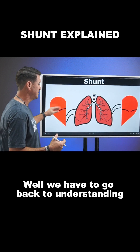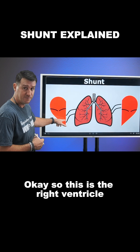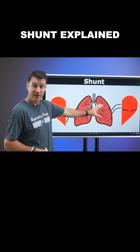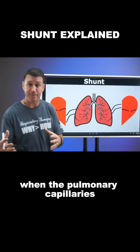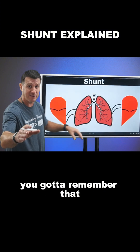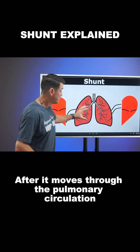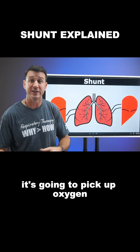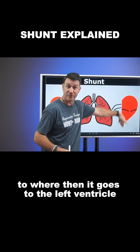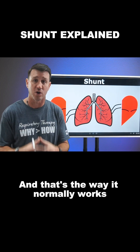We have to go back to understanding just normal blood flow through the heart. This is the right ventricle, and the right ventricle is responsible for pumping blood flow through the pulmonary capillaries. In this space right here, when the pulmonary capillaries interact with the alveolar units, this is where they pick up oxygen. The blood in the right ventricle is deoxygenated blood. After it moves through the pulmonary circulation in normal healthy lungs, it picks up oxygen and returns to the left atrium, then goes to the left ventricle and out for systemic circulation and ultimately oxygen delivery. That's the way it normally works.